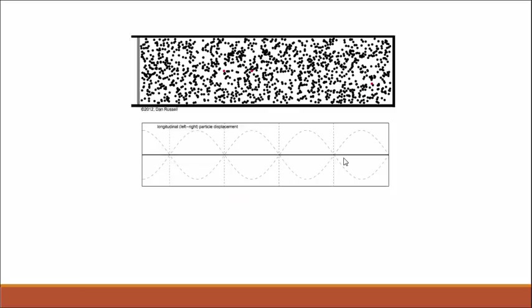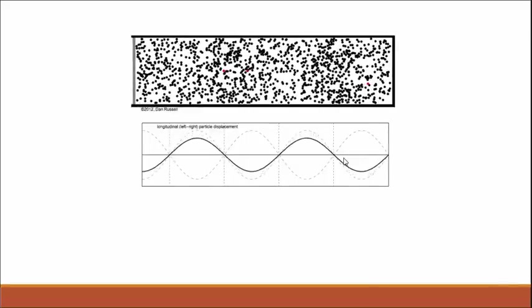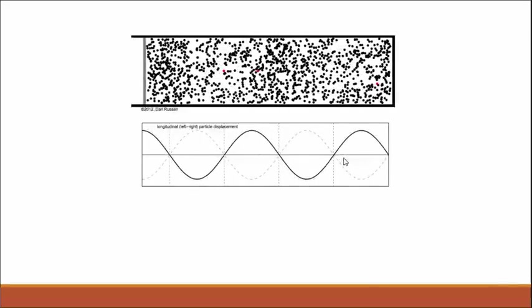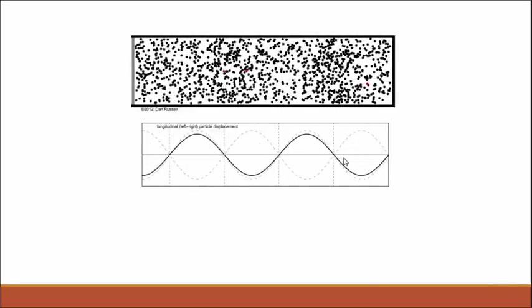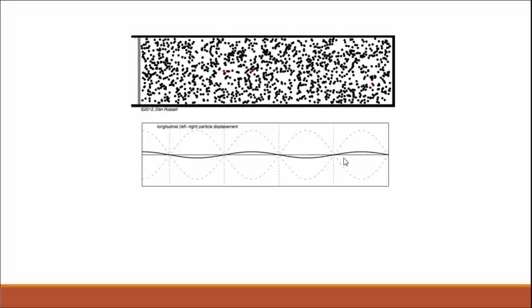And you'd have the same thing on your longitudinal wave here. These would be the nodes where it's not moving. Here in the middle where you have maximum movement would be considered the anti-nodes.